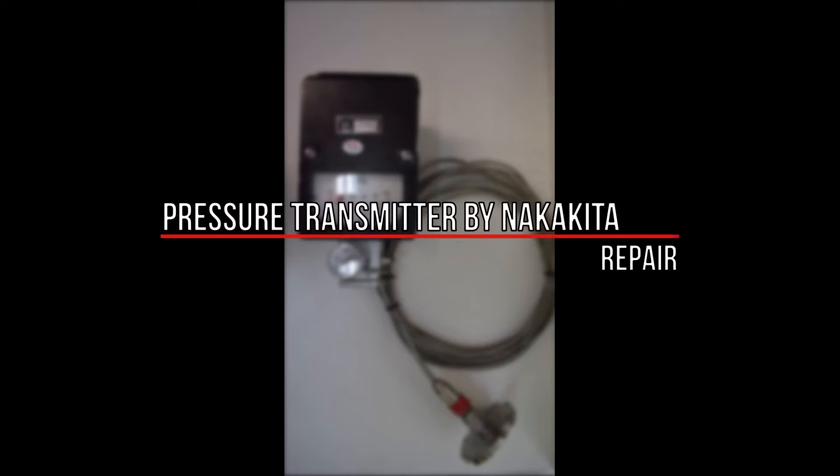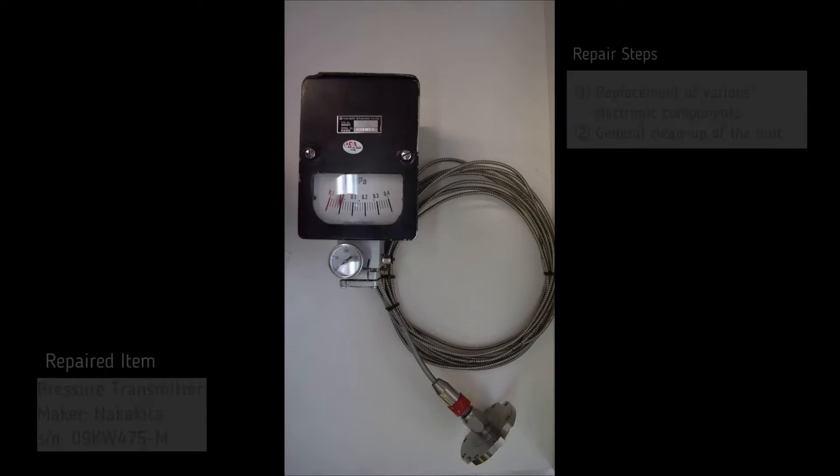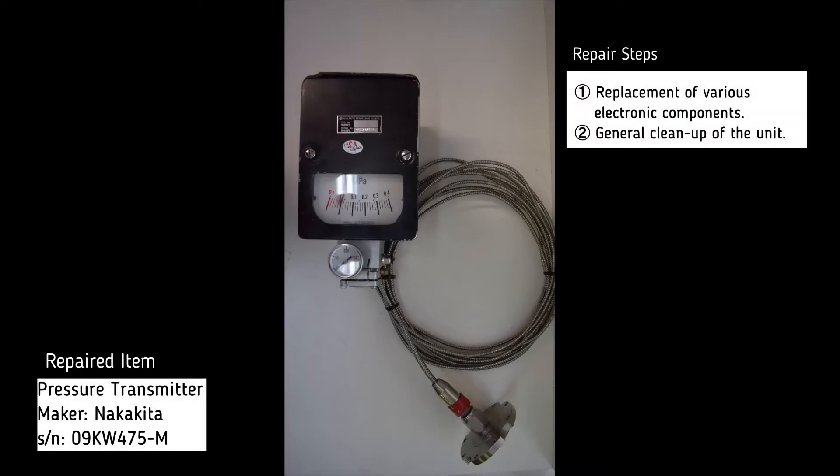For the repair of the pressure transmitter by Nakakita, the following procedures were necessary: replacement of various electronic components and general cleanup of the unit.